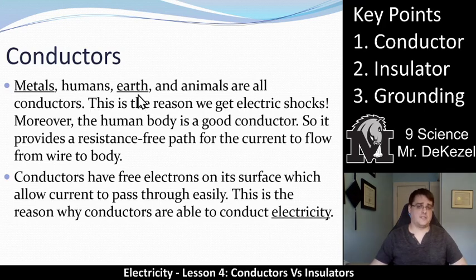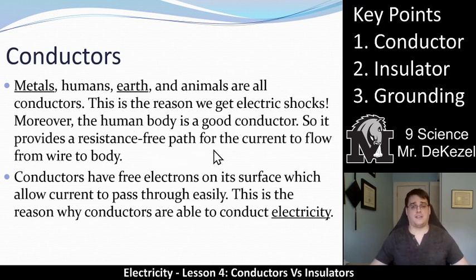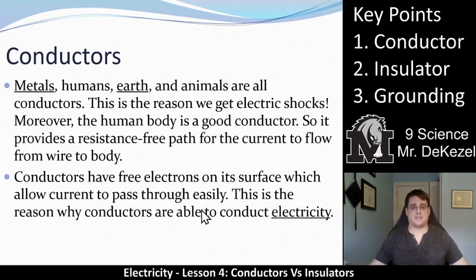Metals, humans, the earth, and animals are all conductors. This is the reason that humans can get an electric shock when you touch a metal wire. The human body is a great conductor — it provides a resistance-free path for the current to flow from wire to body and then often to the ground. Conductors have free electrons on their surface which allow the current to pass through easily. This is the reason why conductors conduct electricity.